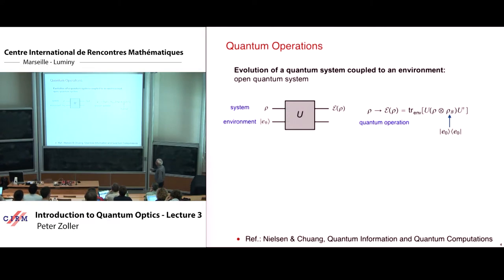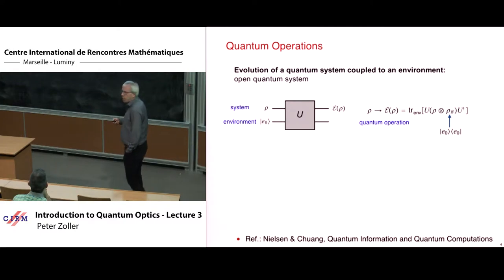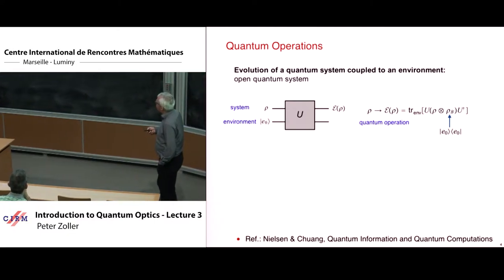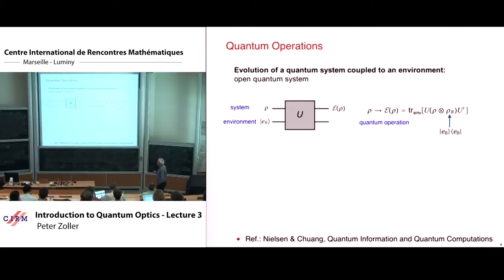If you open a book on quantum information like Nielsen and Chuang — 'Quantum Computation, Quantum Information' — there is a chapter on what they call quantum operations. As in quantum optics, we have a system of interest coupled to an environment. In the quantum information context, this amounts to having decoherence. In quantum optics, we often want to play with this environment by introducing engineered dissipation that does interesting tasks. You will see examples of these things later if I get to the second part.